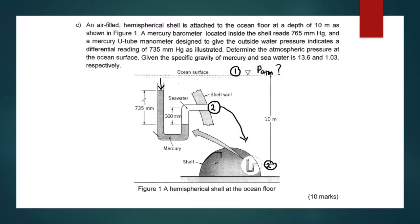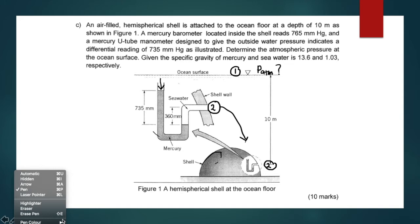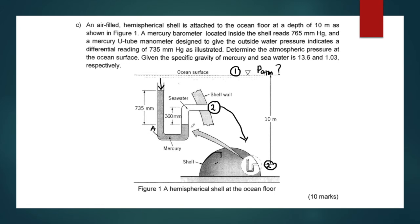Now, after we determine P_shell, this pressure acts on the mercury in the manometer. We have to calculate what is the pressure at point 2, so we need to apply the manometer concept from Chapter 2. I will label points A and B on the manometer. Point A corresponds to P_shell.